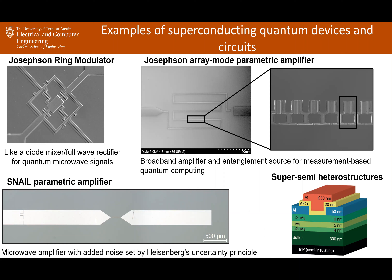Regarding the question about chains of Josephson junctions — essentially the Josephson junction is a non-linear inductor, and when you combine many of them in series you are able to set how much non-linearity you want versus some other parameter that goes into designing this device. In a few slides I'll tell you a little bit about how you design a microwave amplifier, and that will involve arraying many of these together.